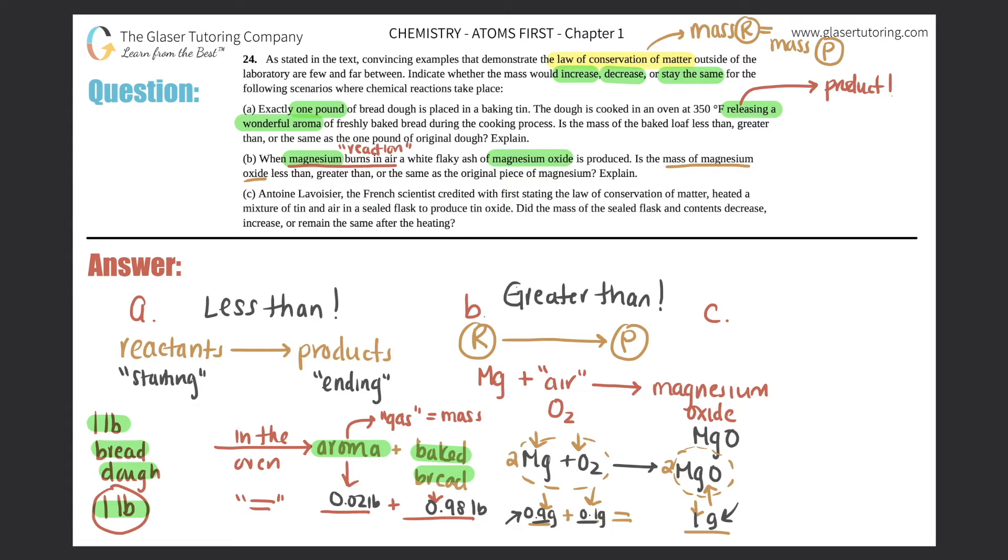Letter C. Anton Lavoisier, I hope I'm saying that right, the French scientist credited with first stating the law of conservation of matter, heated a mixture of tin and air in a sealed flask to produce tin oxide. Here, there's that reaction again - you're mixing tin. Tin is Sn plus air. So tin plus air, this would be O2, and you would get out tin oxide.